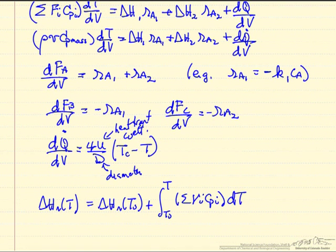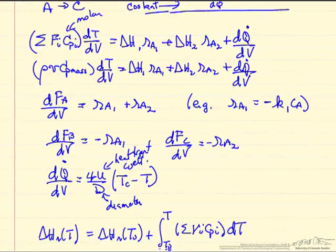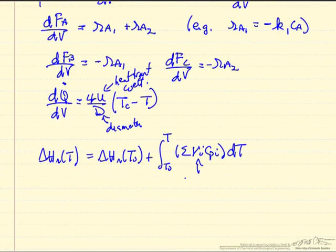So if we were looking at this first reaction, A goes to B, then this is just the heat capacity of B minus the heat capacity of A. But the stoichiometric coefficients, if they're products, is positive, reactants is negative, and the number of course can be greater than 1 in general.